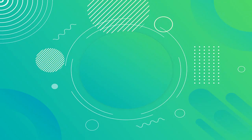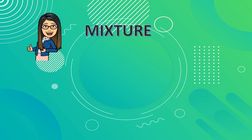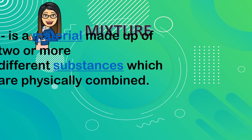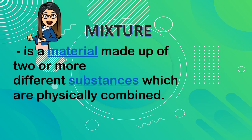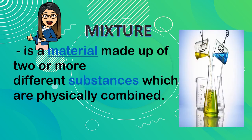From our past lesson we studied what a mixture is and the two types of mixtures. A mixture is a material made up of two or more different substances which are physically combined.